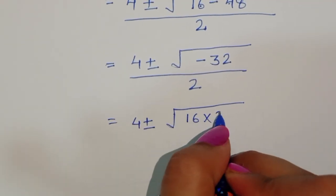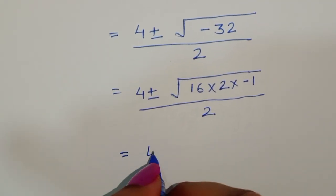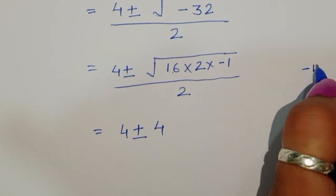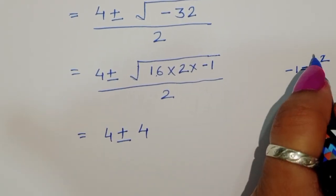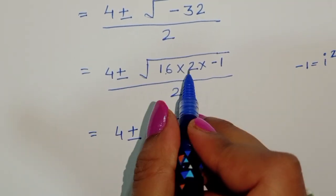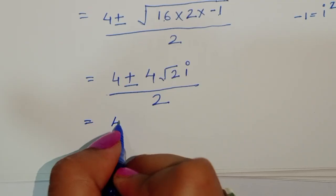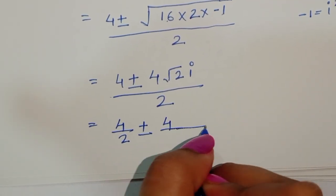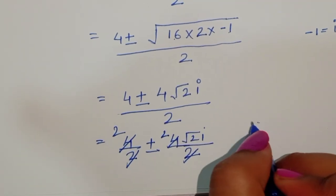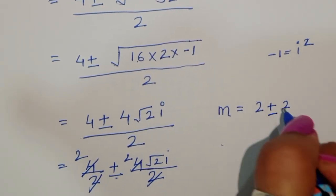Now the square root of minus 32: we know minus 1 equals i squared, so the square root of minus 1 is i. The square root of 16 is 4, so we get 4 times square root of 2 times i. Dividing by 2: m equals 4 divided by 2 plus or minus 4 square root of 2 i divided by 2, giving m equals 2 plus or minus 2 square root of 2 i.